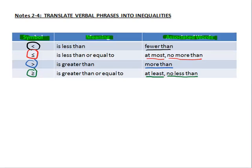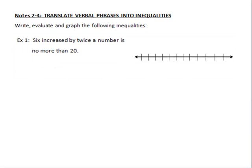So now we're going to go ahead and use this information to help us get started on working the examples. Example 1 says to write, evaluate, and graph the following inequality. It says 6 increased by twice a number is no more than 20. So I'm going to take the approach like I did with the equations, and I'm just going to start at the beginning of my sentence and work through it. Now the first important word I have is 6. That just tells me the number 6.